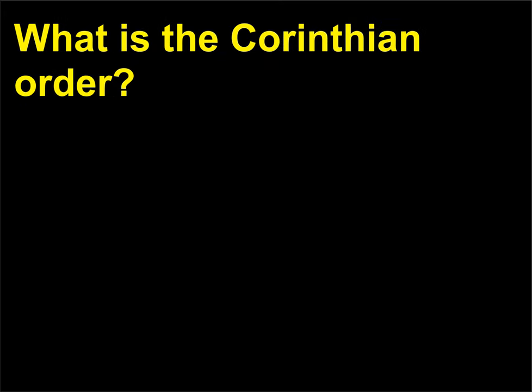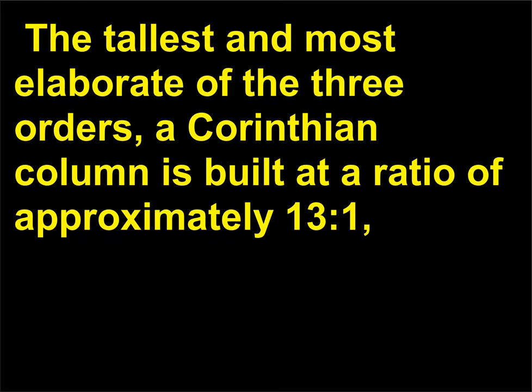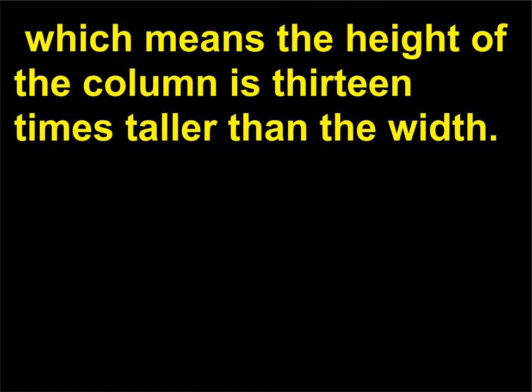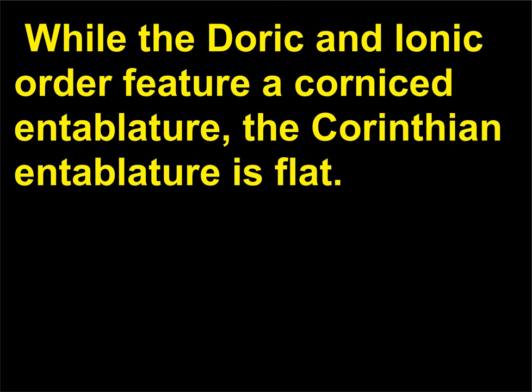What is the Corinthian order? The Corinthian order was the last of the three classical Greek orders of architecture to develop. The tallest and most elaborate of the three orders, a Corinthian column is built at a ratio of approximately 13:1 — meaning the height of the column is 13 times taller than the width. Originally designed for interior use, the Corinthian order features a capital decorated with flowers and leaves of the acanthus plant. While the Doric and Ionic orders feature a cornice entablature, the Corinthian entablature is flat.